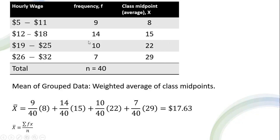And now we have all the information we need to calculate the mean of this grouped data. And the easiest way, I think, of doing this is just calculate a weighted average of the class midpoints. So here's the class midpoints, and we're going to weight them by the fraction of observations that belong to that class.